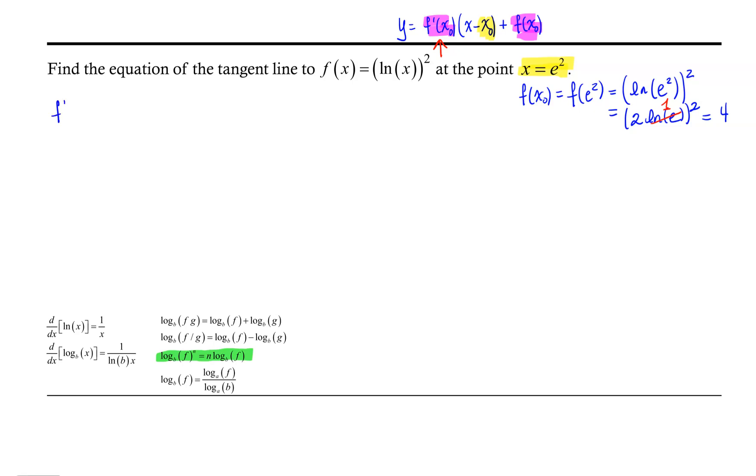f'(x) is equal to, now we have something squared, so it's going to be 2 times the argument of that squared function to the first power. The argument is the natural log of x.